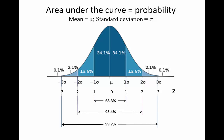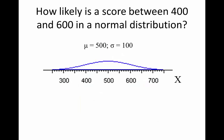We can use this knowledge to address practical questions. For example, suppose we have a normal distribution with a mean of 500 and a standard deviation of 100, and we'd like to know what portion of these scores fall between 400 and 600. We can see that most of the scores are in that range, but exactly what percent? The solution is to convert to z-scores, where the z represents how many standard deviations a score is from the mean.